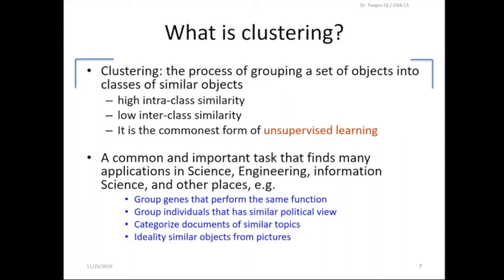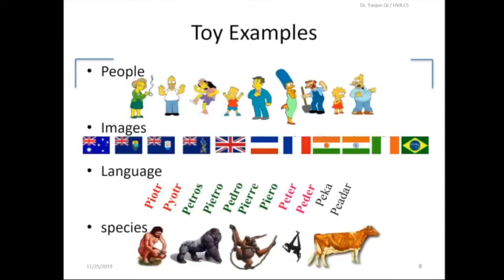This is almost the most heuristic task people start to handle data. Can I group documents according to topics? Can I identify proteins with similar functions? Can I group individual persons according to their political views? This is pretty easy, but it's the most commonly used.